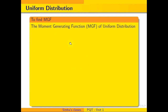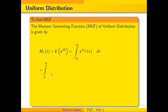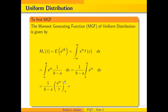The moment generating function of uniform distribution is given by M_x(t). Since this is a continuous random variable, the MGF equals the expectation of e^(tx), which is the integral from minus infinity to plus infinity of e^(tx) f(x) dx. Here, f(x) is the uniform distribution, so the limit is a to b, giving us 1/(b−a) dx. Since 1/(b−a) is a constant, we have (1/(b−a)) times the integral from a to b of e^(tx) dx. Integrating e^(tx) gives e^(tx)/t, evaluated from limit a to b.